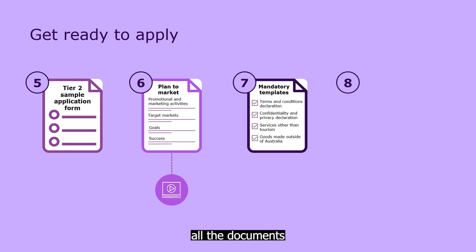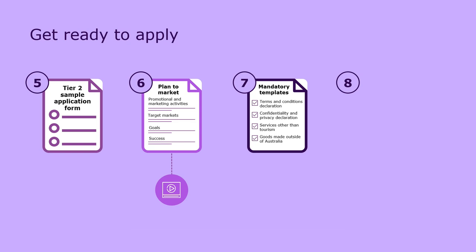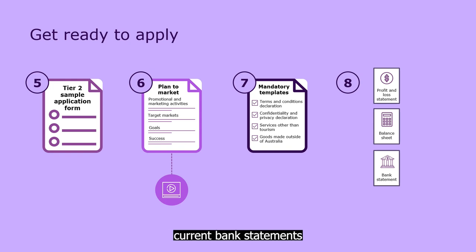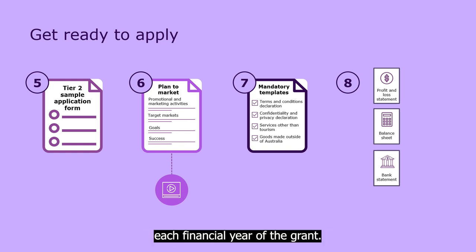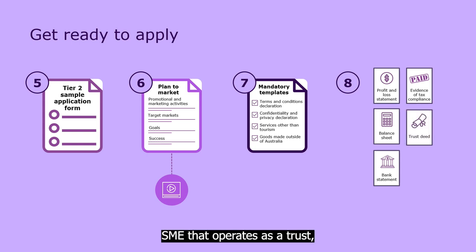Prepare all the documents that confirm your eligibility. Gather together evidence of recent export sales and proof that you've been in business for two years and that your turnover is over $500,000. This should include a profit and loss statement and balance sheet from the past two financial years. You'll also need to provide current bank statements that show you have a capacity to spend at least $20,000 of your own money each financial year of the grant. You'll need evidence of your tax compliance, for example documents like a business activity statement or a notice of assessment. And if you're an SME that operates as a trust, you'll need your trust deed and any amendments if that applies to you.